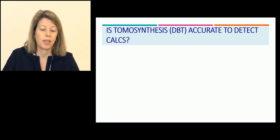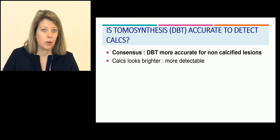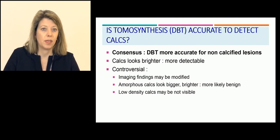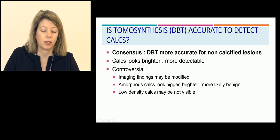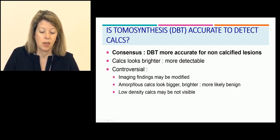Is tomosynthesis accurate to detect calcifications? Tomosynthesis could be more accurate for non-calcified lesions such as asymmetry, masses, and distortion. Calcifications usually look brighter on tomosynthesis and could be more detectable, but we have to be careful because morphology can be modified for calcifications with DBT. Some amorphous calcifications could look bigger and brighter, appearing more likely benign — so it could change your interpretation. Also, some low-density calcifications may not be visible on tomosynthesis, especially on synthetic views.